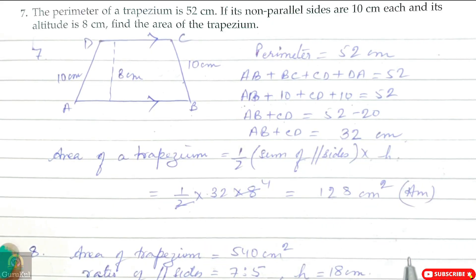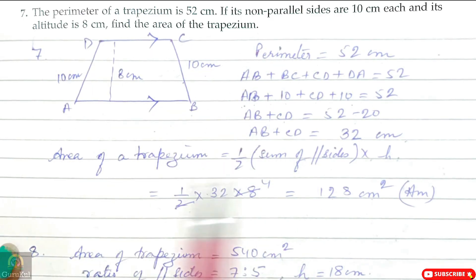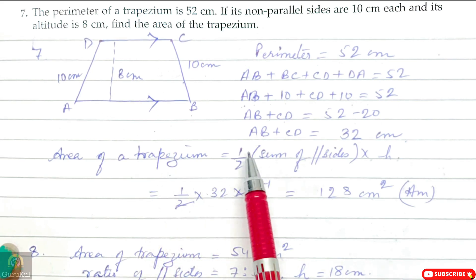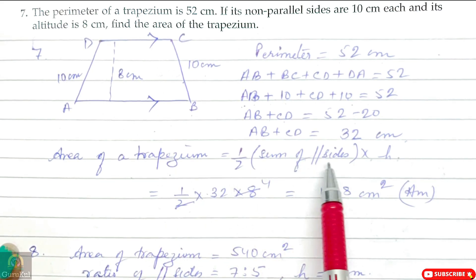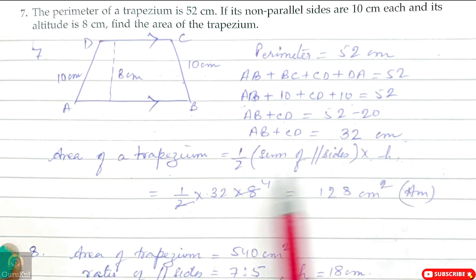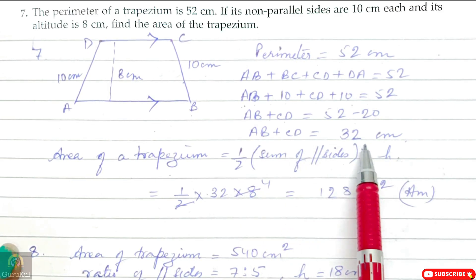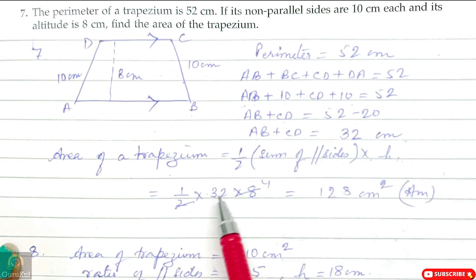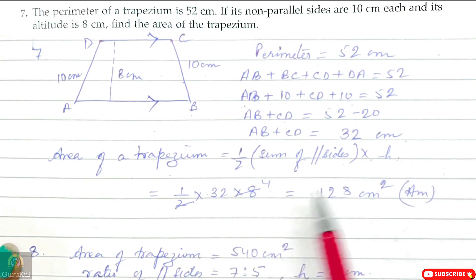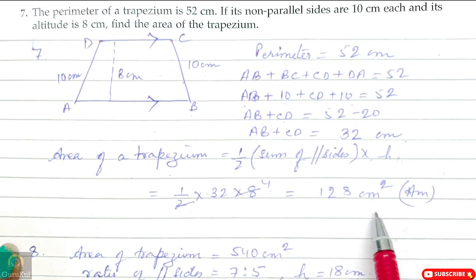We need to find the area of the trapezium. We do not need to find the individual side lengths. According to the area formula of a trapezium, it is half into sum of its parallel sides into height. So half into 32 into 8. After calculation we got 128 cm square. And this is the answer.